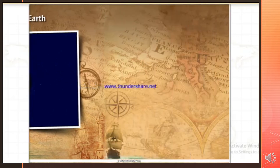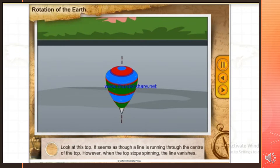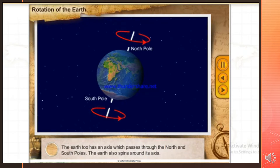Rotation of the Earth. All spinning objects have an imaginary line called an axis on which they spin. Look at this top. It seems as though there is a line running through the center of the top. However, when the top stops spinning, the line seems to vanish. The Earth too has an axis which passes through the north and south poles. The Earth also spins around its axis.